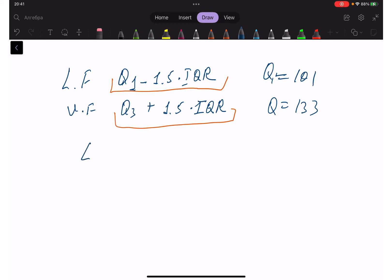So low fence is going to be 101 minus 1.5 times 32. Let me plug it: 1.5 times 32, and we are getting 48. So it equals 101 minus 48 equals 53. And upper fence is going to be equal 133 plus 48. 8 plus 3 is 11, so 181.